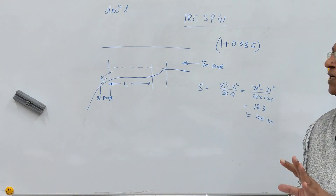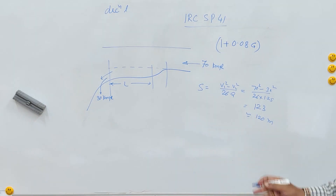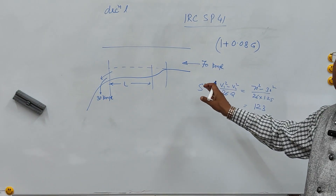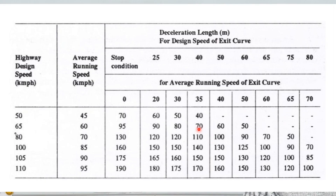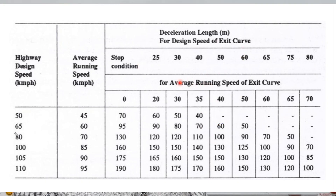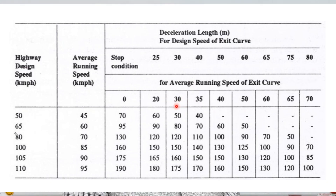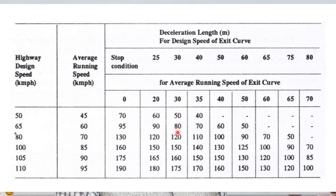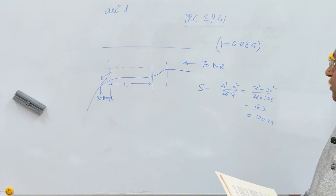IRC SP 41 also provides a table for the length of the deceleration lane. Using the same example — average running speed of 70 km/h and exit curve speed of 30 km/h — you need a length of 120 meters, which matches what we calculated. So you can either read these values from the table or calculate yourself using the equation L = (V1² - V2²) / (26A).